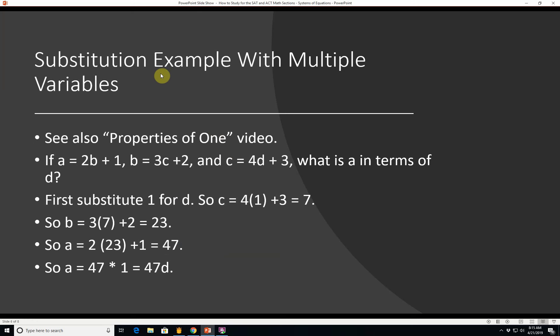Substitution example with multiple variables. You might be given something on the SAT or the ACT like what I did in my properties of one video. So let's say if a equals 2b plus 1, b equals 3c plus 2, and c equals 4d plus 3. What is a in terms of d? First you want to substitute 1 in for d. That's why it's in the properties of 1 video.